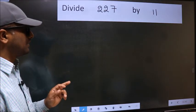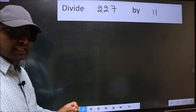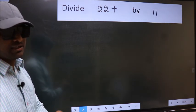Divide 227 by 11. While doing this division, many do this mistake. What is the mistake that they do? I will let you know.